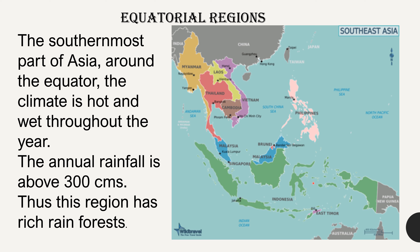In the southeastern or southernmost part of Asia, near the equator, the climate is hot and wet throughout the year. The annual rainfall is around 300 centimeters. Thus, this region has rich tropical rainforest areas.